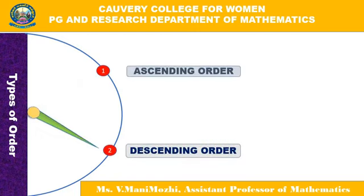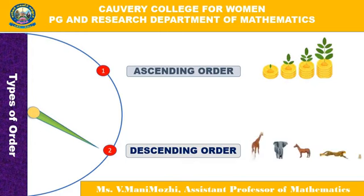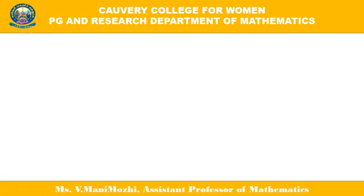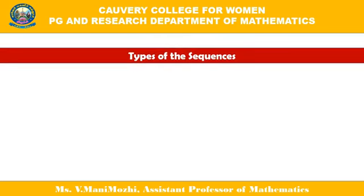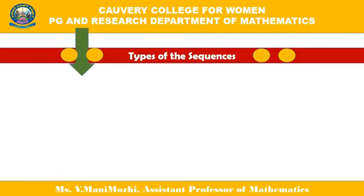An example for ascending order is given by the growth of a plant. And for the decreasing order, animals from the tallest to the shortest is given as an example. There are many types of sequences defined in mathematics, and they are often named after the property that they have or even the person who first described the sequence.